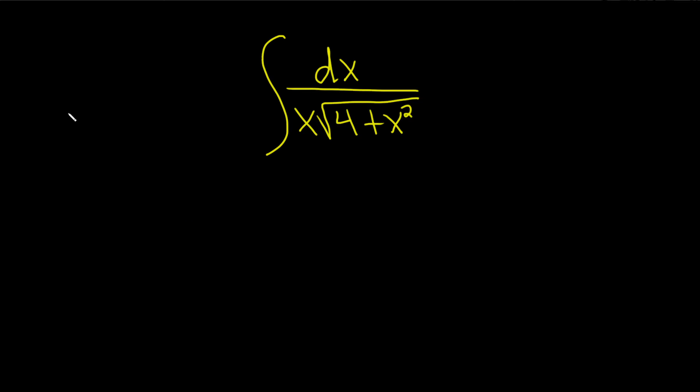So the formula that we're going to use is the following. If you have the integral of du over u square root of 1 plus u squared, this is actually equal to negative inverse of the hyperbolic cosecant of the absolute value of u plus c. That's what it's equal to, that's the formula.